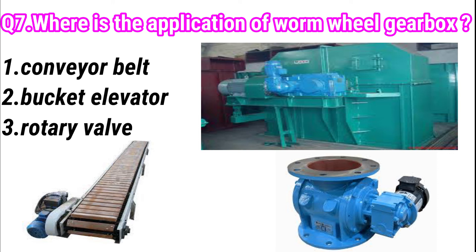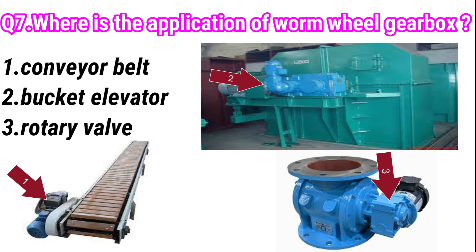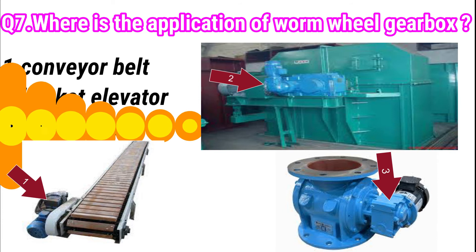The next question: where are the applications of worm wheel gearboxes? Worm wheel gearboxes are seen on conveyor belts — this type of gearbox is used there because it has a self-interlocking mechanism which prevents the belt from moving backward when stopped. It is also used in a bucket elevator, where during maintenance you need to run the bucket in very slow motion. Additionally, a worm wheel gearbox can be seen in a rotary wrap where a constant flow of material is needed in material handling equipment.